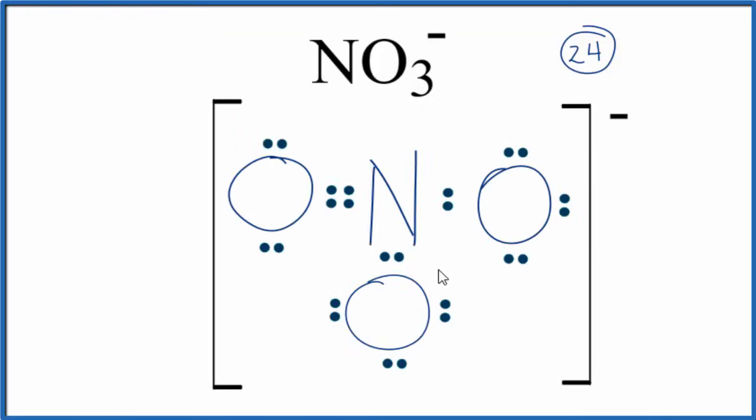So that's the Lewis structure, molecular geometry, bond angles, and resonance for the NO3 minus Lewis structure, the nitrate ion. This is Dr. B, and thanks for watching.